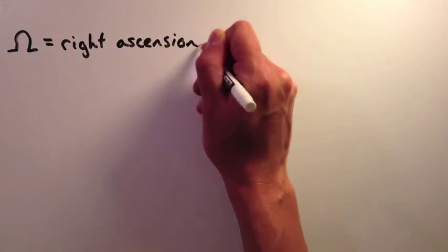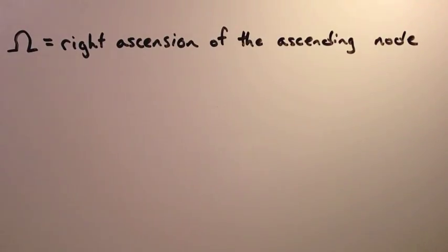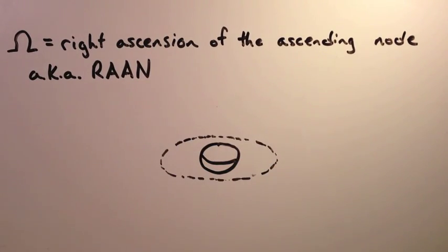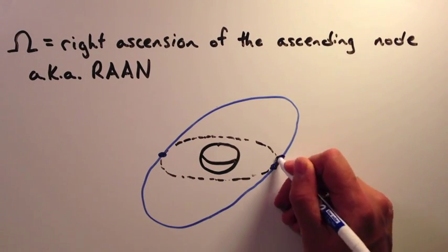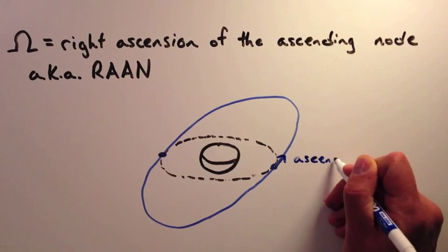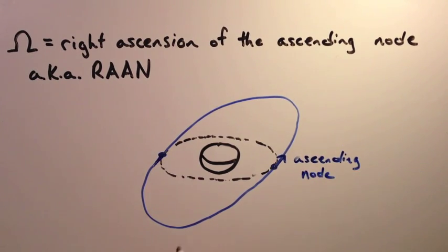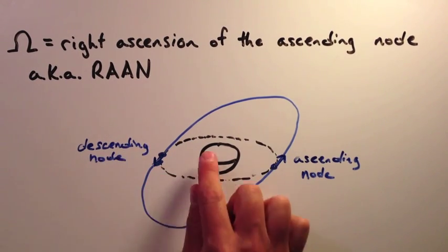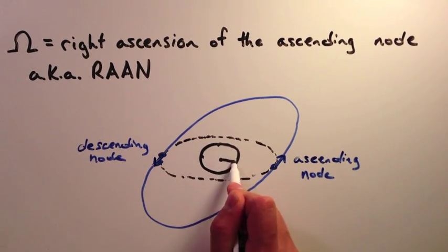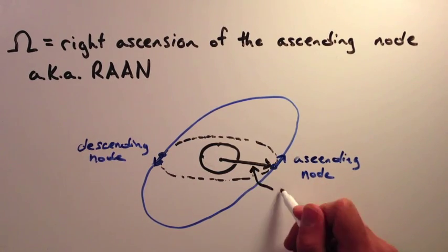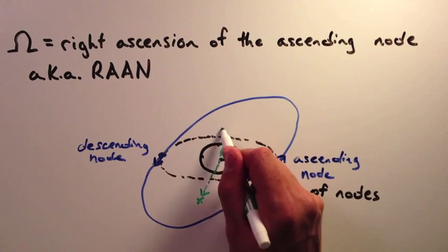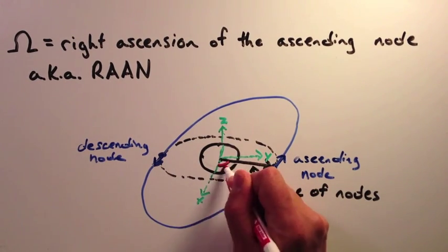Ω, or capital Omega, is the right ascension of the ascending node. For an inclined orbit, there are two points when the satellite crosses the equatorial plane. When the satellite crosses the plane and is moving upward, this is called the ascending node. When you draw a line from the center of the Earth to the ascending node, this is called the line of nodes. The right ascension of the ascending node is the angle from the coordinate system x-axis to the line of nodes.